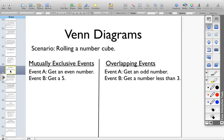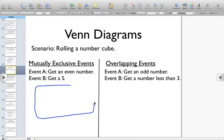Let's say I'm rolling a number cube. Event A is I get an even number. Event B is I get a five. So how do I know if these are mutually exclusive or overlapping? One way of helping us determine whether we have mutually exclusive or overlapping events is to draw some sample spaces and see where they fall.